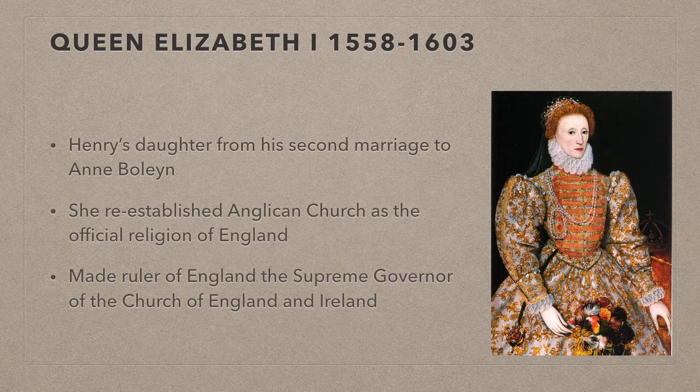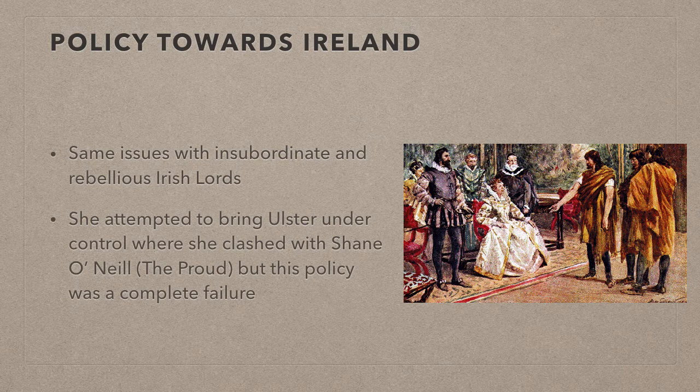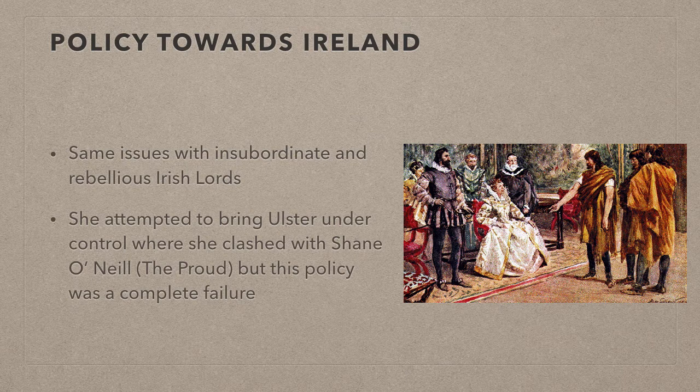As far as her policy towards Ireland, Elizabeth met many of the same problems that her sister, her brother and her father had met — mainly that insubordinate Irish lords resented and kicked against royal authority. In her early attempts to bring Ireland firmly under English control, she focused on subjugating Ulster, which was known as the most Gaelic part of Ireland. Here she clashed with Shane O'Neill, sometimes known as Shane the Proud, and she attempted to plant Ulster, but the attempt turned out to be a complete failure. Elizabeth's attentions were then turned to the south of the country and the Gaelic-ised Anglo-Normans.